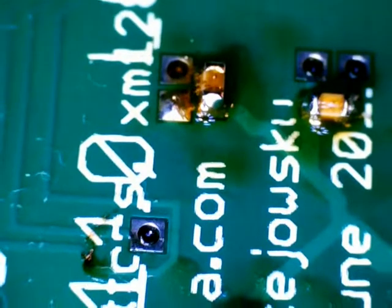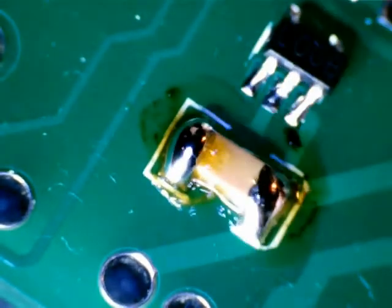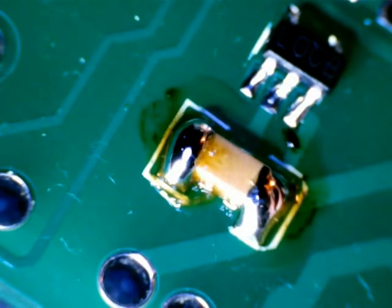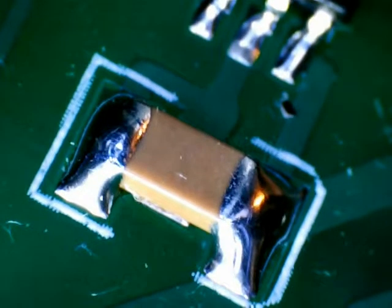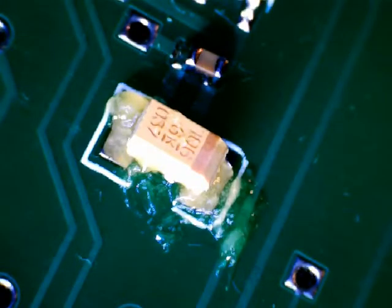This is one way you can reflow them. 1206 parts are huge at 3mm in length and are very easy to solder. Tantalums are just as easy to solder as ceramics.